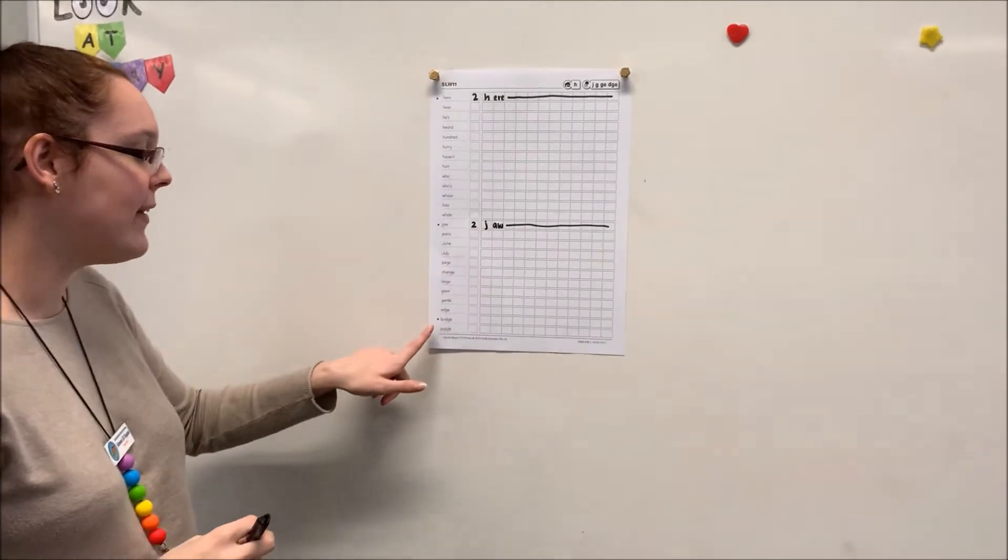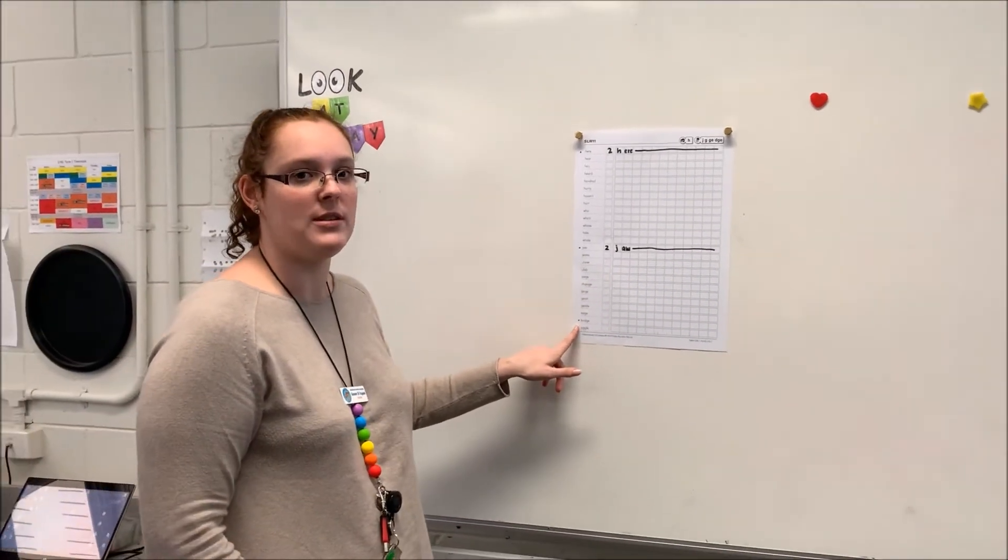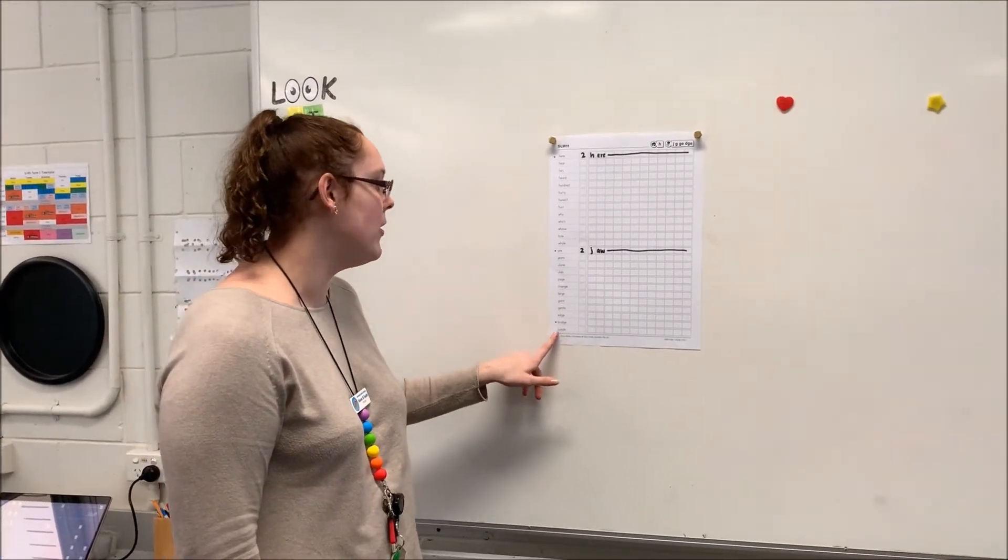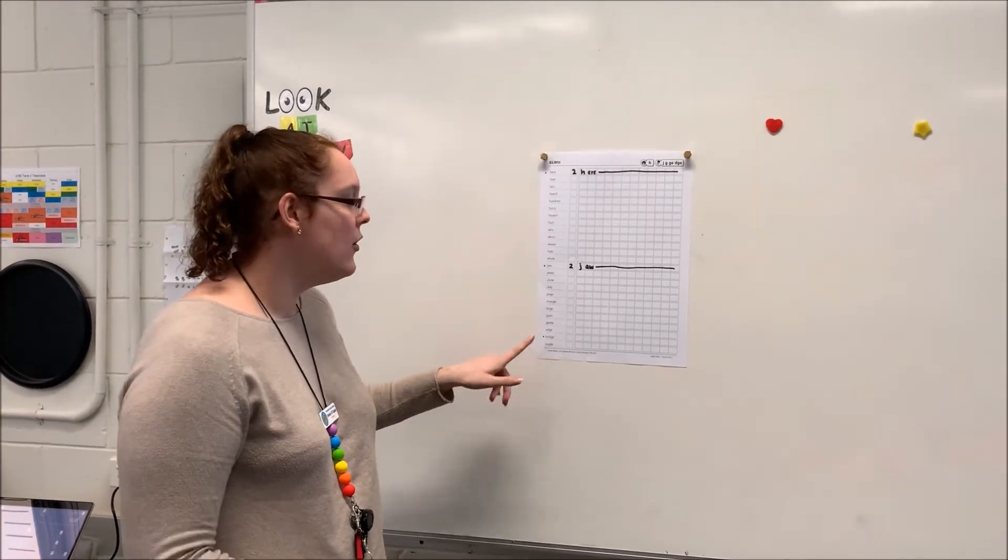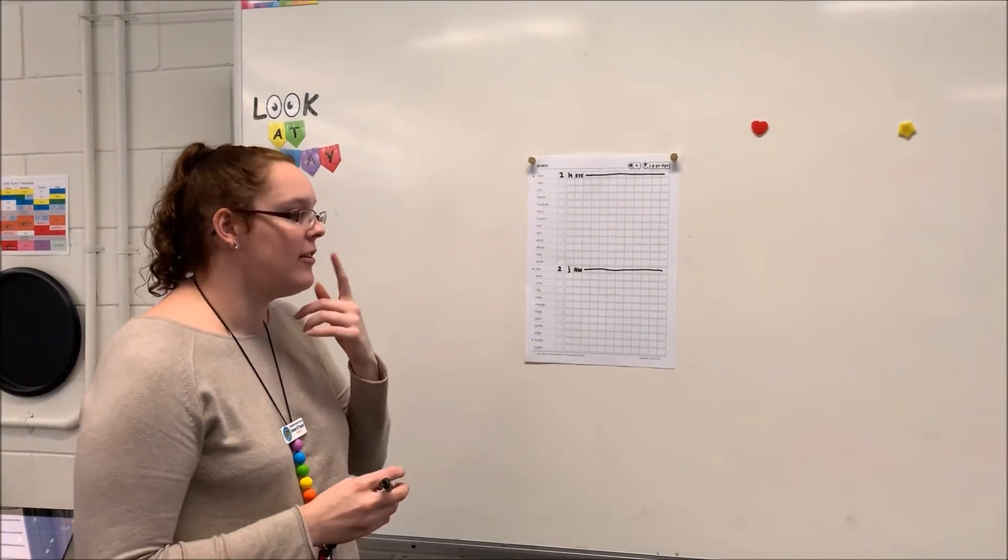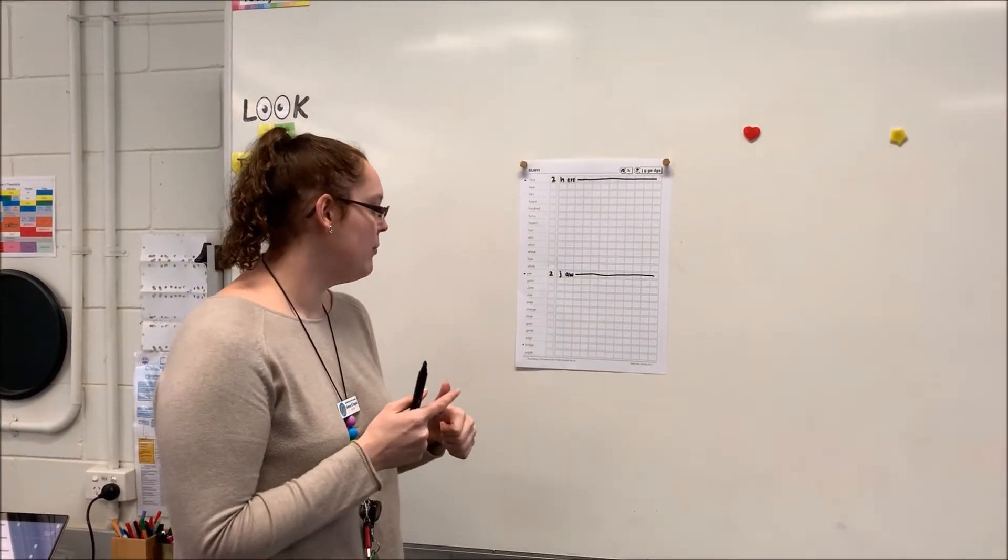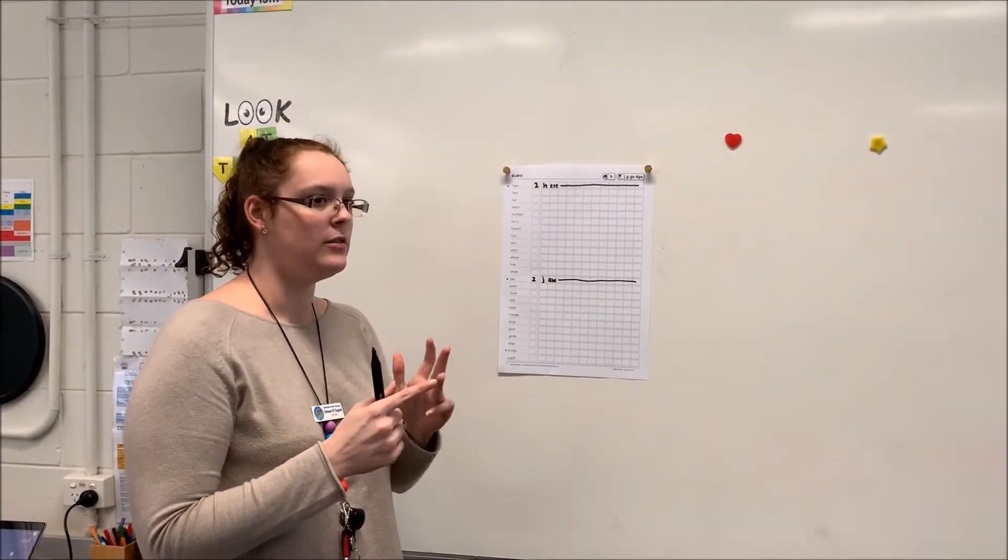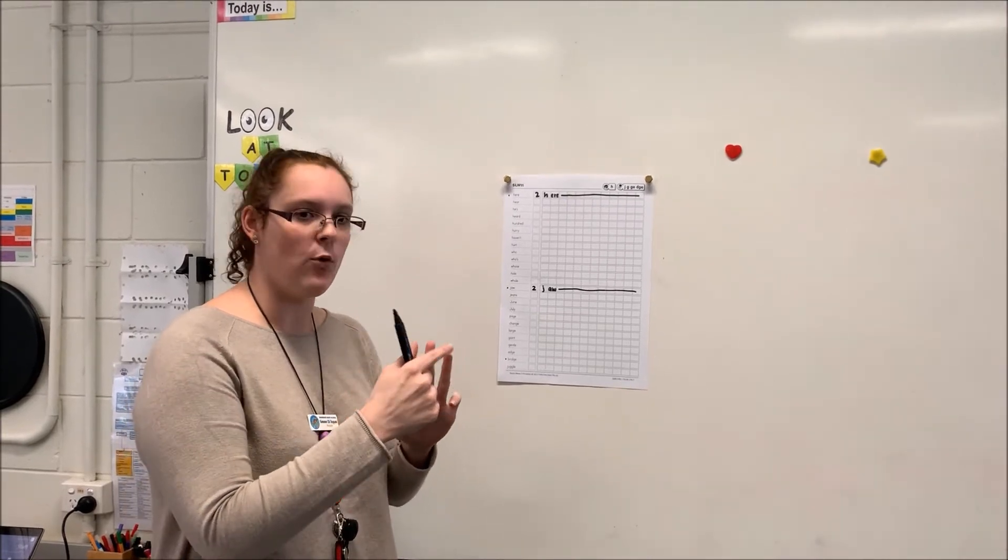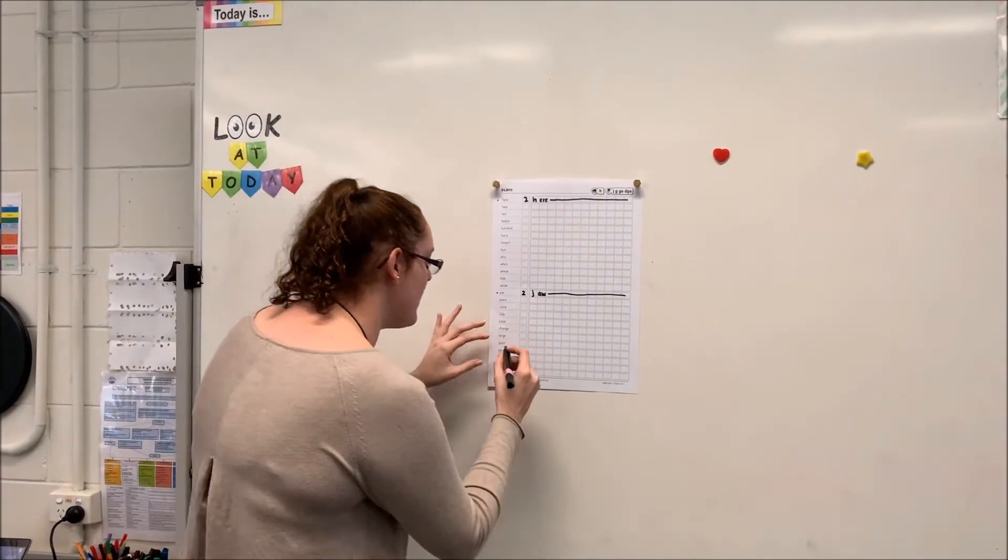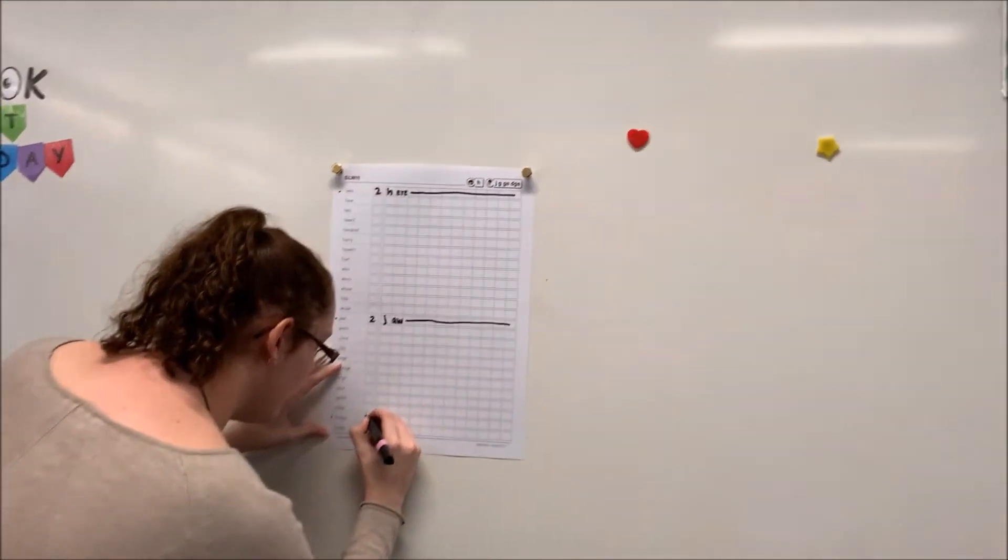Now we have one last word, and I thought we might do this one together because it's a really tricky word: bridge. We need to first say it out loud. We're going to break up the sounds: B, R, I, J. I can hear four sounds in that, so I'm going to write the number four in my dotted box.